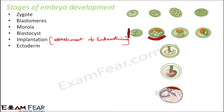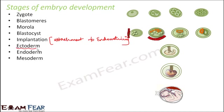After implantation, the cells present there start differentiating to form different layers. Three layers of cells are formed: ectoderm (the outer layer), endoderm (the inner layer), and mesoderm (the middle layer). From these three layers all other tissues develop; from the tissues, organs develop; and from the organs, organ systems develop.